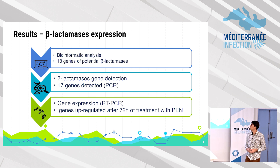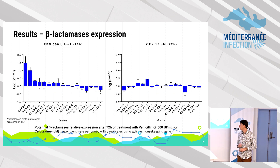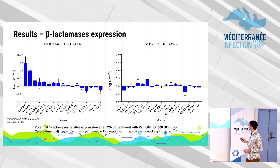We then tested beta-lactamase expression. Using a database, we identified the genes in Vero E6 cells and found 18; I confirmed 17 by PCR to date. Testing gene expression by RT-PCR, we found two beta-lactamases strongly up-regulated, some moderately changed, and some inhibited. When we switched to cefotaxime, we did not see the same profile of increased gene expression.